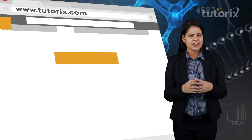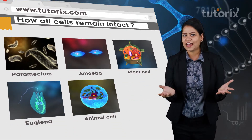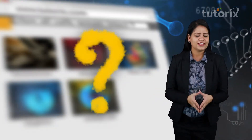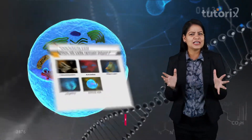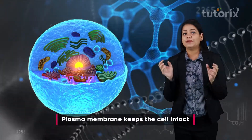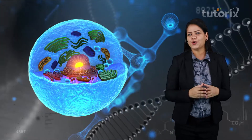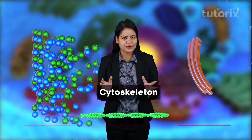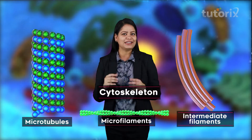Have you ever thought what keeps our cells intact? Do they also have a skeletal system of their own? Until now we learned that the plasma membrane or the cell membrane helps the cell to keep intact. But a major role is played by the cytoskeleton — simply the skeleton present inside the cell — to keep it intact.